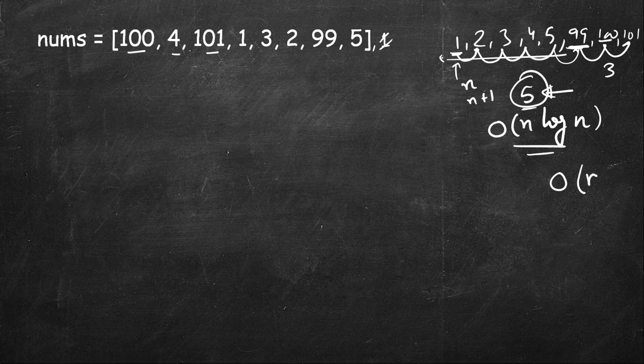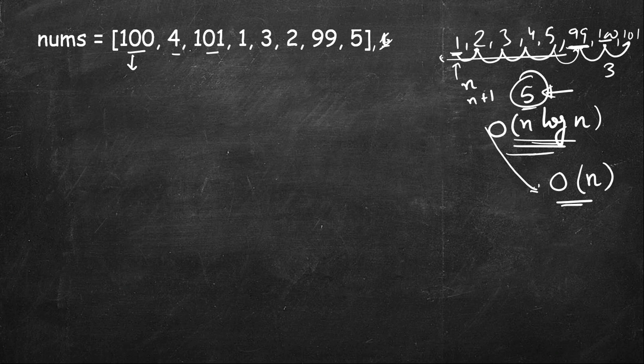An unordered set in C++ or a hash set is useful here because we need to stay in O(n). We cannot use sorting — it clearly violates the constraint. We also have a very big range so we cannot use approaches like bucket sort in O(n). So what we will do is remove duplicates: since duplicates do not increase the length of a sequence, we insert all elements into a hash set.